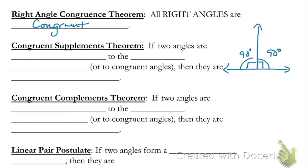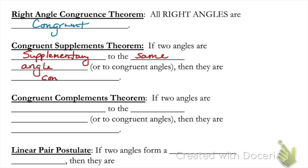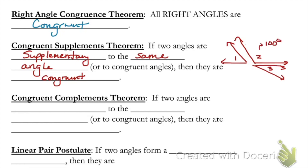The next one is the congruent supplements theorem. This says that if two angles are supplementary to the same angle, or to congruent angles, then those angles must be congruent. Remember, supplementary means two angles whose measures add up to 180 degrees. So if angle one is 80 degrees and angle two is 100 degrees, and angle three is also 80 degrees, then angle one is supplementary to angle two, and angle three is also supplementary to angle two. That means angle one and angle three have the same measure and must be congruent.